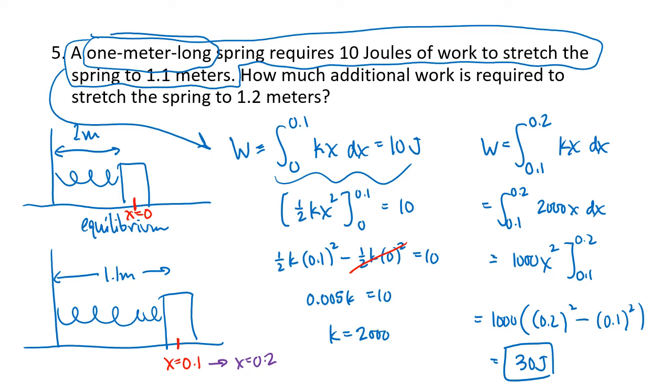So with these spring problems, the key thing that you want to do is figure out what k is based on the information in the problem. In the previous problem, we were given the force that it took to extend or compress the spring, and we just set our force equal to that amount of force that we were given and solve for k. This one was a little bit trickier because they gave us the work that was required to stretch or compress the spring, but again, we solve for k and then use that value of k to answer our question. So I hope this helps you understand how these work integral problems happen to work out, and I'll see you for the next video.